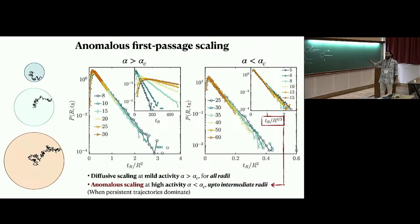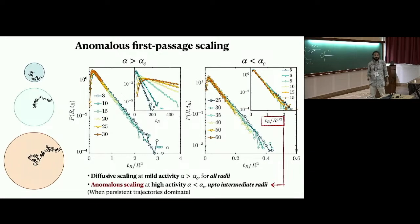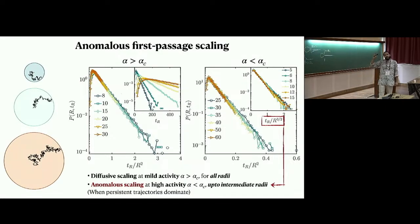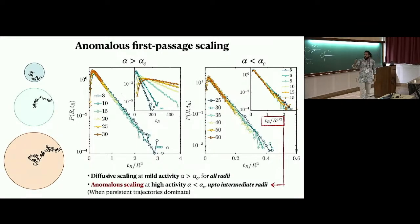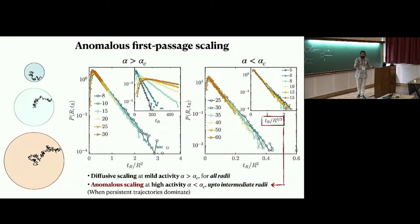If you look at first passage problems — how quickly particles travel a certain radius, also called survival time — you also get anomalous scaling for the high activity case at intermediate radii. Trajectories seem to be of two kinds: diffusive or persistent. Depending on the length scales you probe, it's either the persistent ones or the diffusive ones that dominate. This leads us to a very interesting aspect of active flows — dynamical heterogeneity — which is not there at all in inertial turbulence.